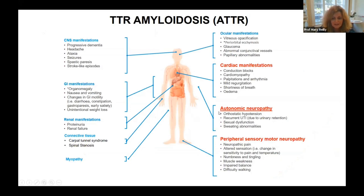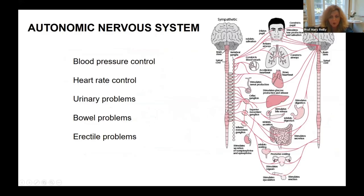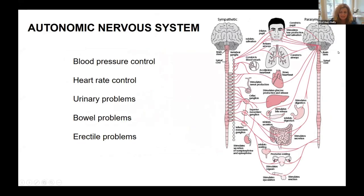The peripheral nervous system has a second part called the autonomic nervous system. It basically deals with everything that happens automatically without us thinking about it. I tend to think of it as the part of us that does things automatically — like driving a car without consciously thinking about it. Our autonomic nervous system deals with a lot of the nervous control of our body systems.